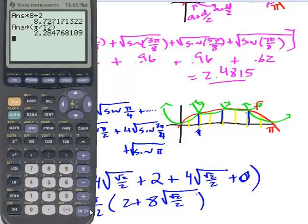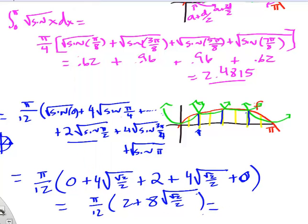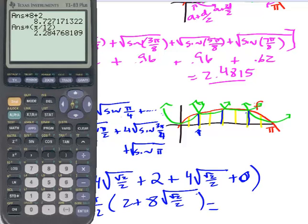And we get our approximation is two point, miss that, two point two eight four seven six eight.